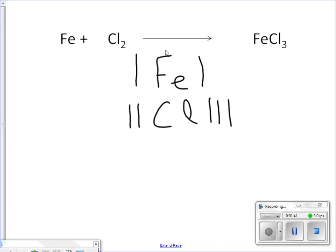I start out with an even number of chlorines, but I end up with an odd number. Whenever that happens, an easy trick is to multiply by two. So now I have two of those iron chloride molecules.